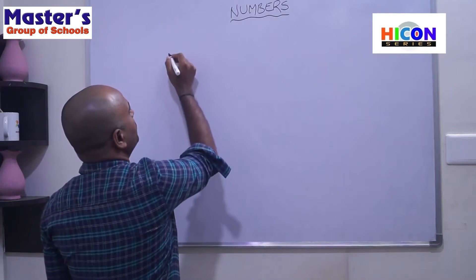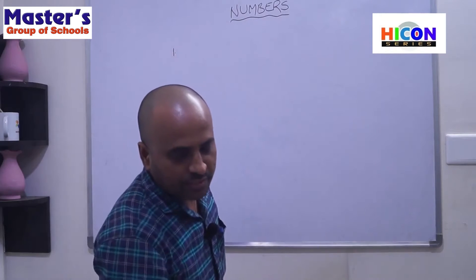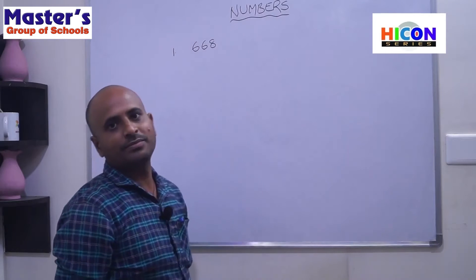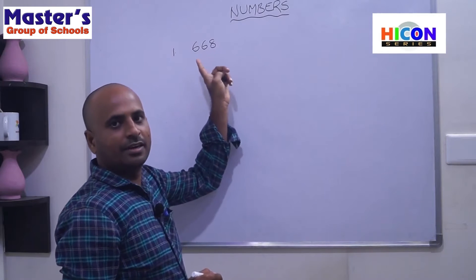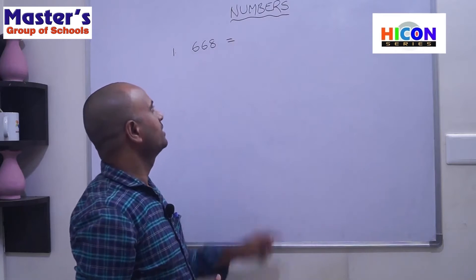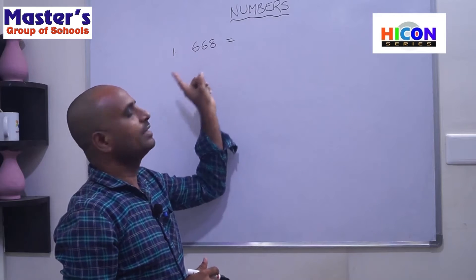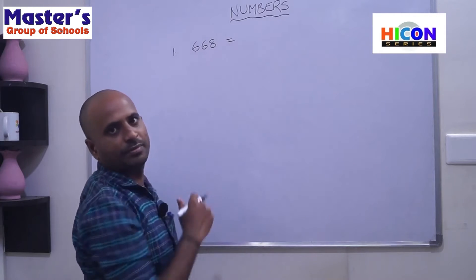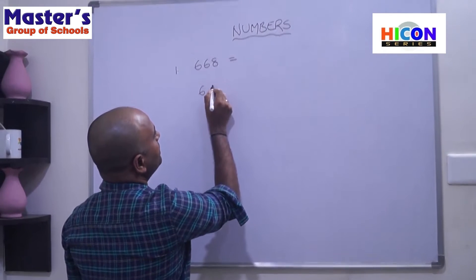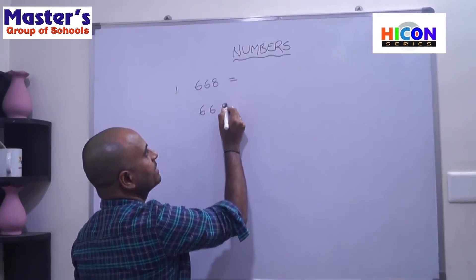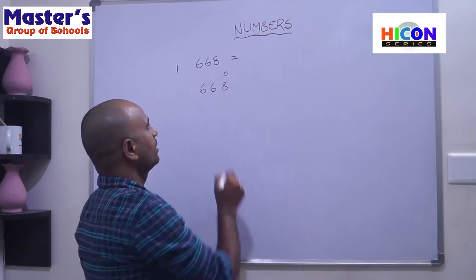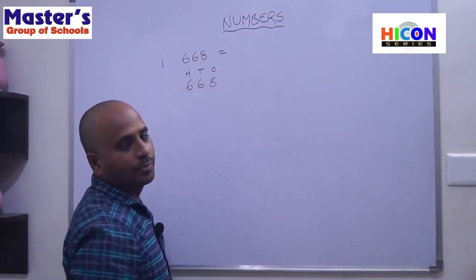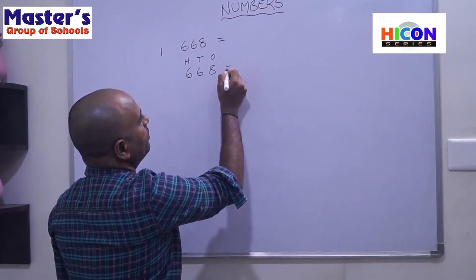The first problem is 668 — six six eight. This is a three-digit number, which you have already learned in second class. To write the number name for this number, first write the place values for the digits. In 668: eight is in ones place, six is in tens place, and six is in hundreds place.